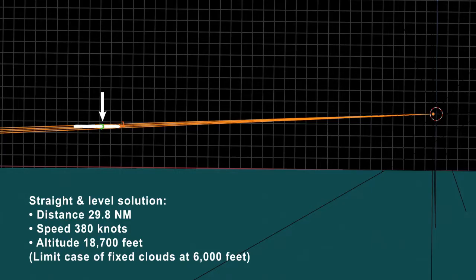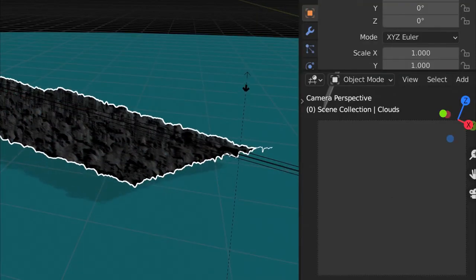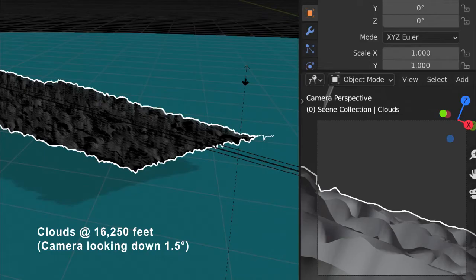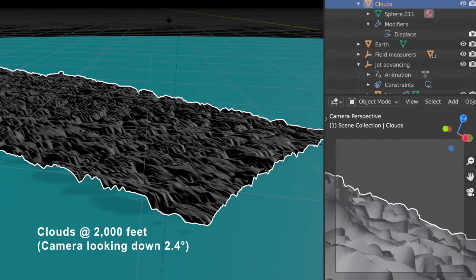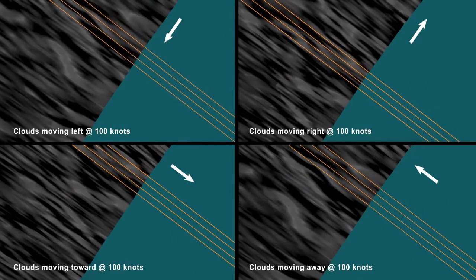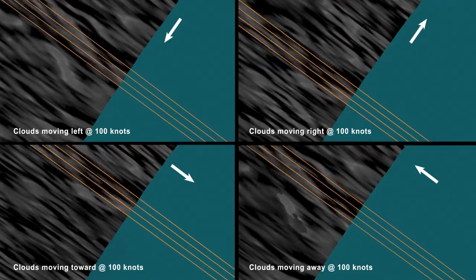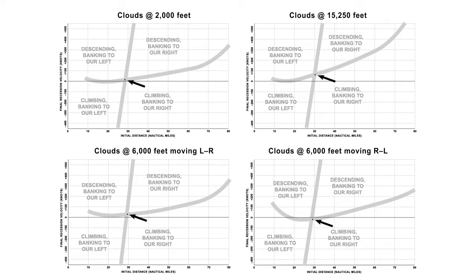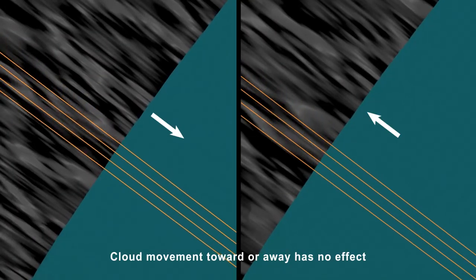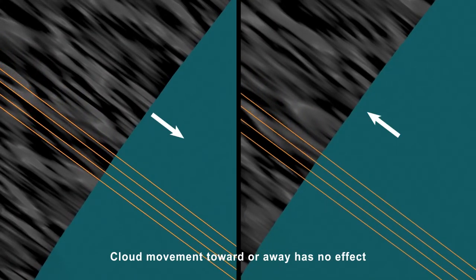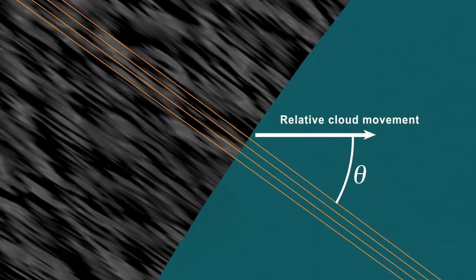But that only applies to the limit case. What if the clouds are higher or lower, or moving? The highest that the clouds could be without obscuring the sky was about 16,000 feet, so I put them there and also at 2,000 feet. Separately, I also had them moving 100 knots in four directions. In all cases, the same scenarios exist, including a straight and level one. Changing the variables just shifts the scenarios in the plot. Cloud movement toward or away has no effect at all, so the influence of any cloud motion is a sine function of this angle.